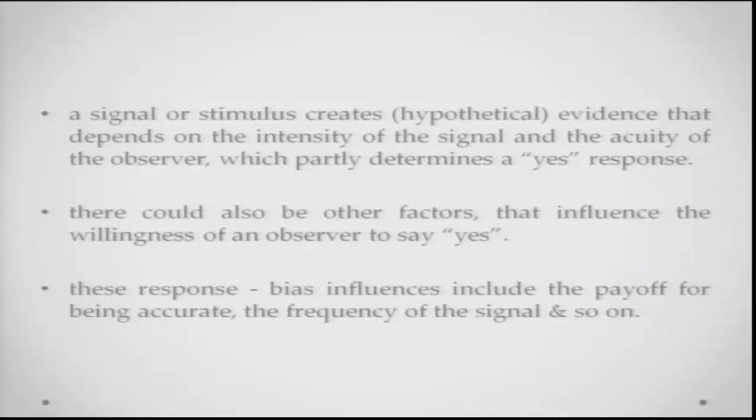A signal or stimulus creates evidence that depends on the intensity of the signal and also the acuity of the observer. For example, if I ask you to distinguish between two shapes, partly this depends upon how different the two shapes are from each other, but it also depends on your ability to see the difference between the two stimuli — that is the acuity of the perceiver or observer. Both of these factors interact to determine whether you will give a yes response to the question that things are different or whether you have detected something.